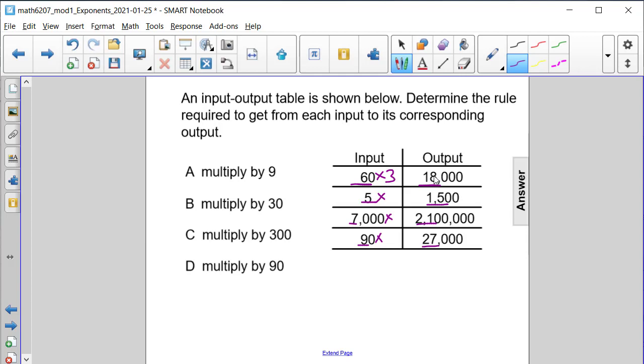6 times 3 gives us 18. 5 times 3 gives us 15. 7 times 3 is 21. 9 times 3 is 27.